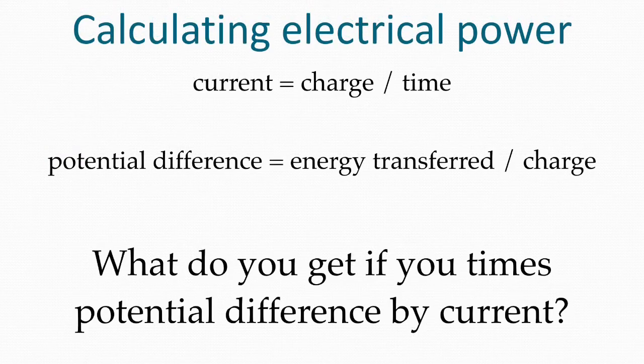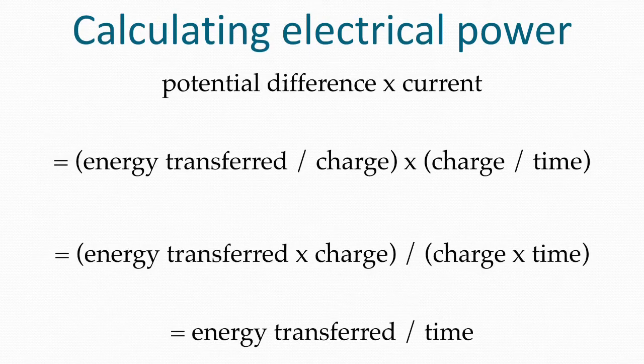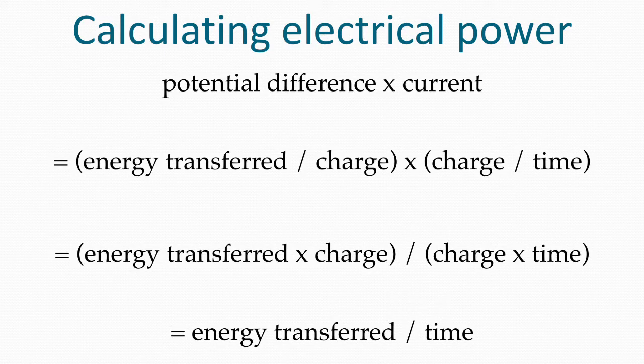By combining these two equations, we can find the power. Potential difference times current is equal to the energy transferred over charge, potential difference, times the charge over time, current.